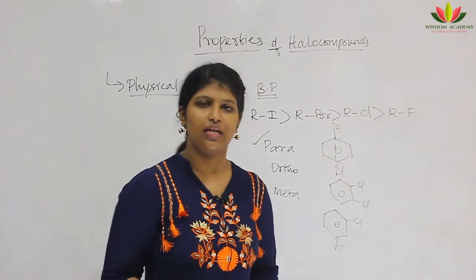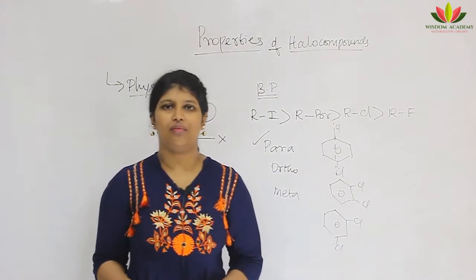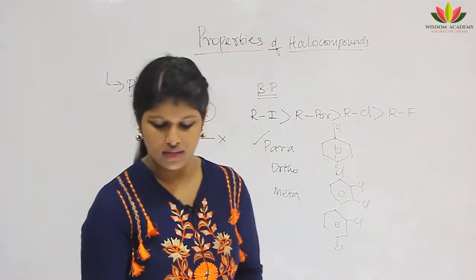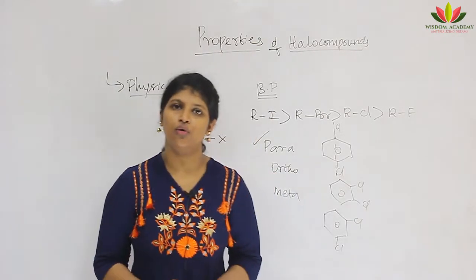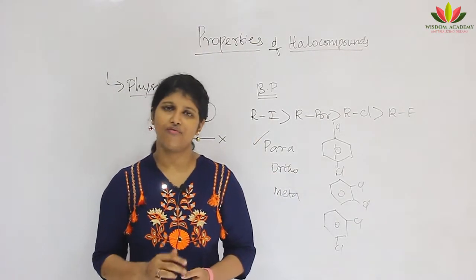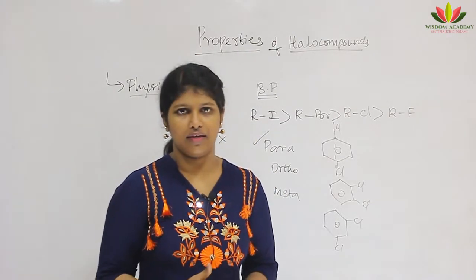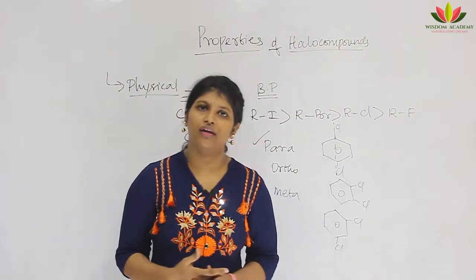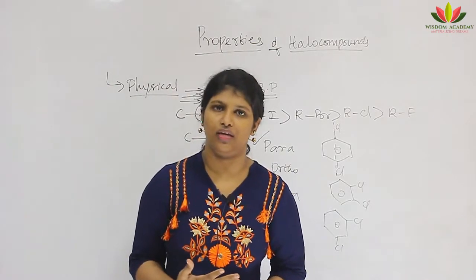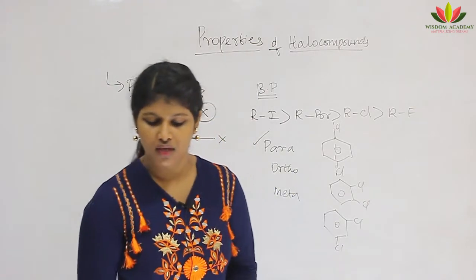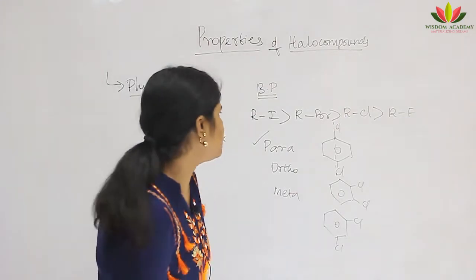Now we will move on to chemical properties. Before getting into the reactions, we need to know five important topics: chirality, SN1 reaction, SN2 reaction, E1, and E2 reaction. We need to understand these five mechanisms first.